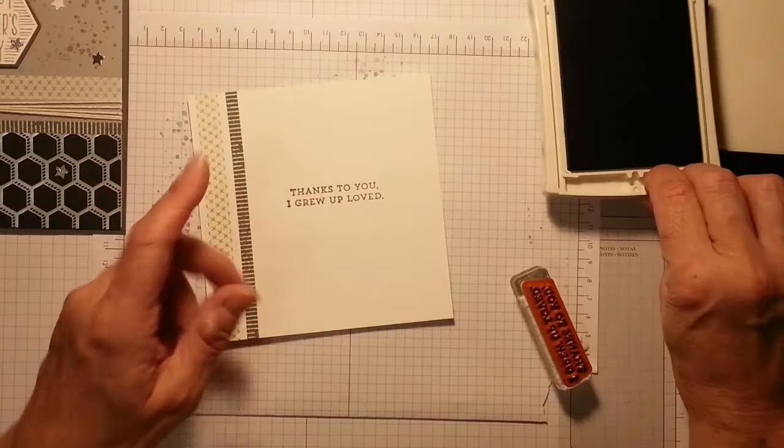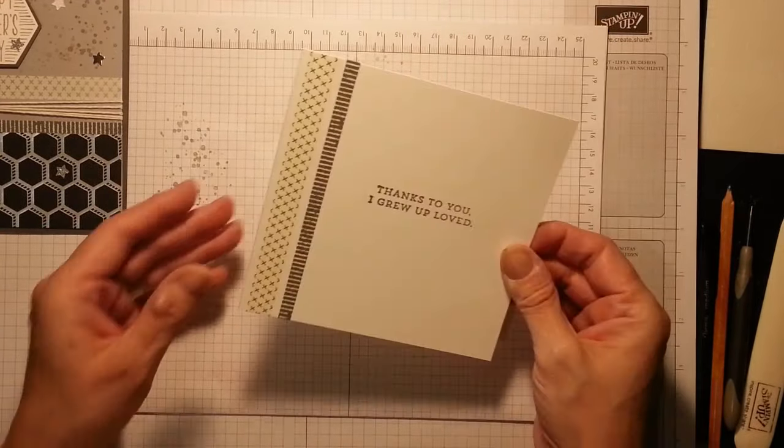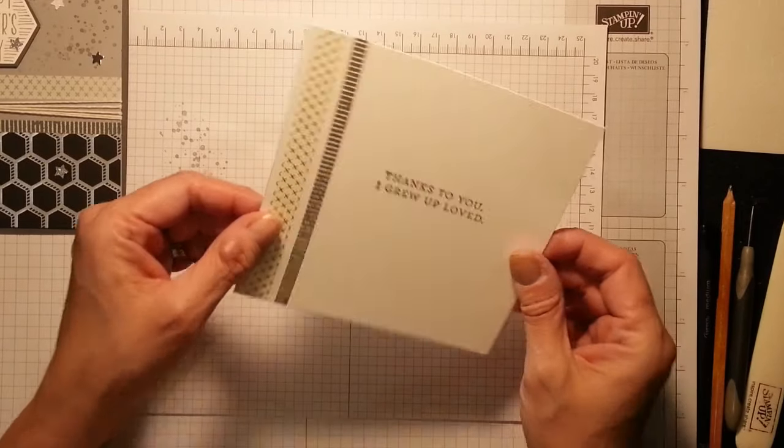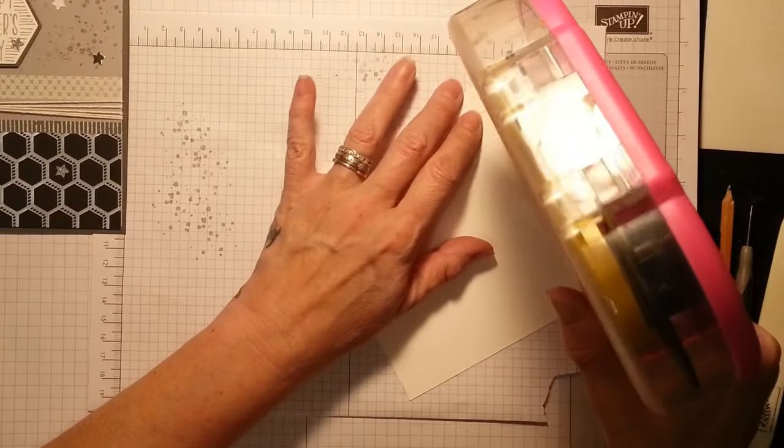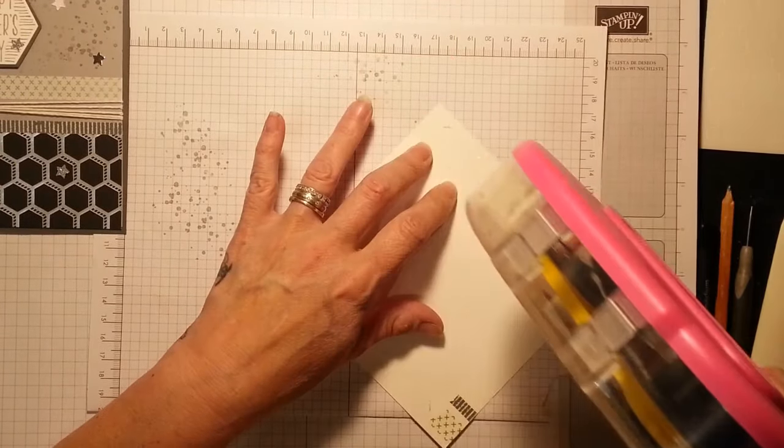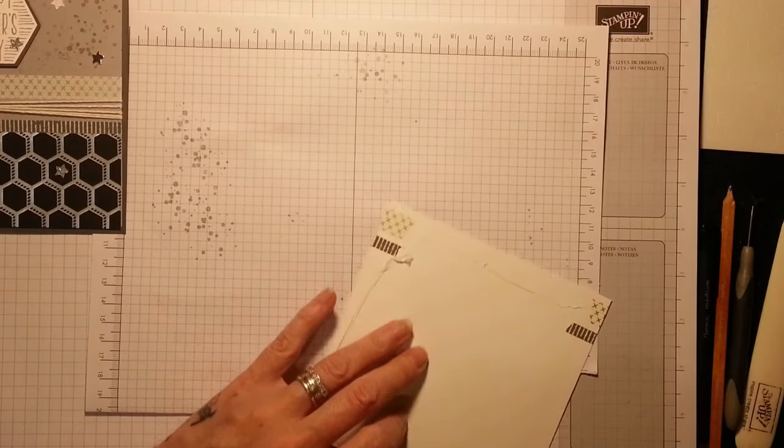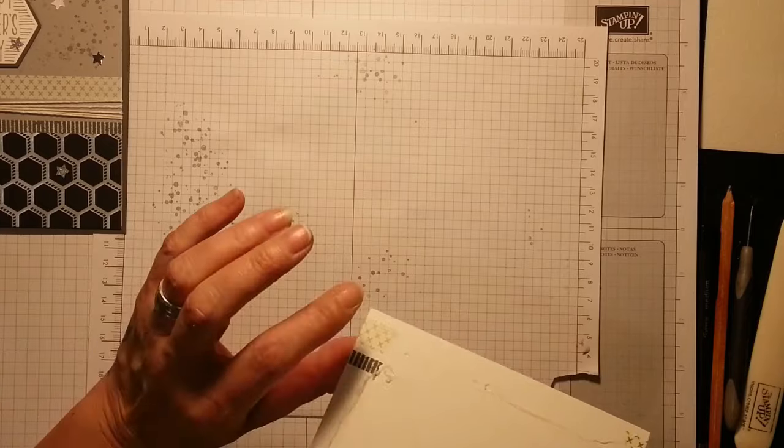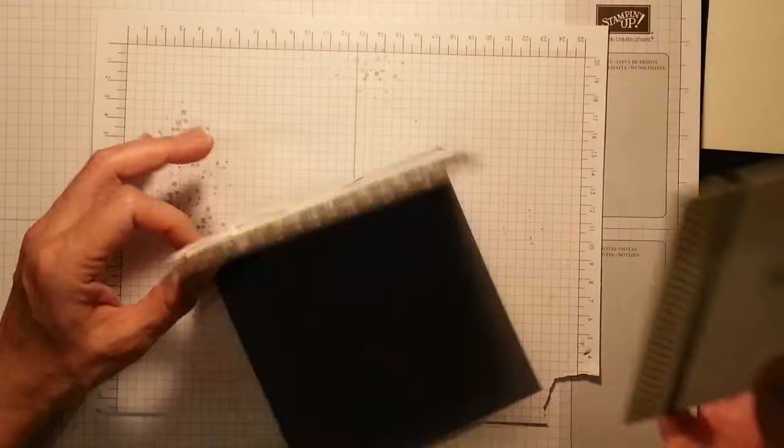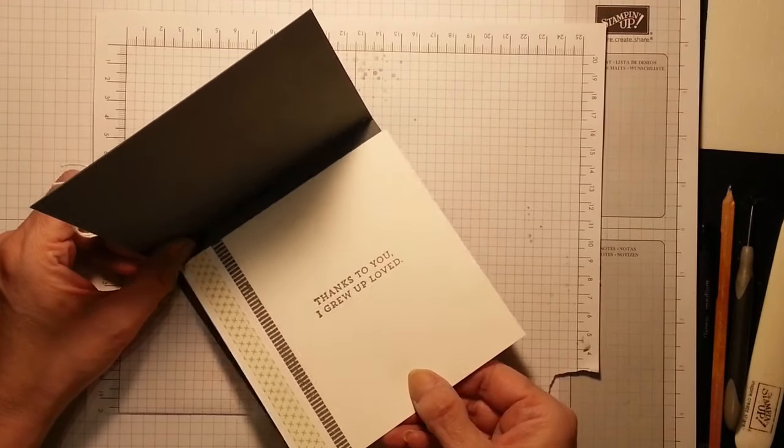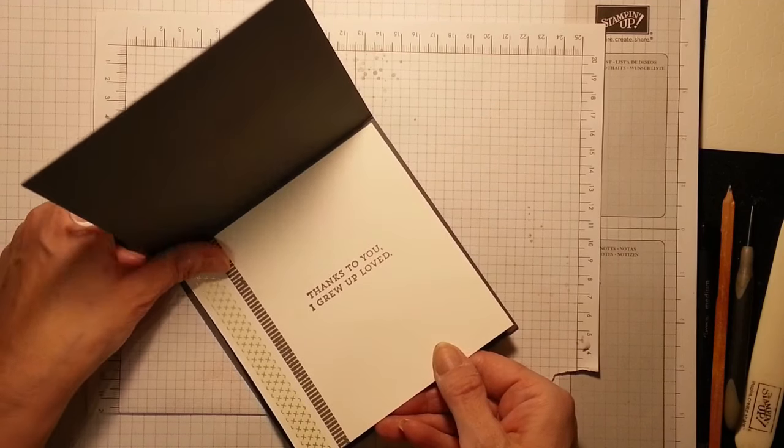The shop now button's also there and the join now button. There's some fantastic offers on if you want to join celebration. I'm only going to eyeball this, but it is pretty straight on my stamp. Oh that's lovely, thanks to you I grew up loved. You could even add another little star if you wanted, but I think that's just so cool. How cute is that? And it's lined up lovely.